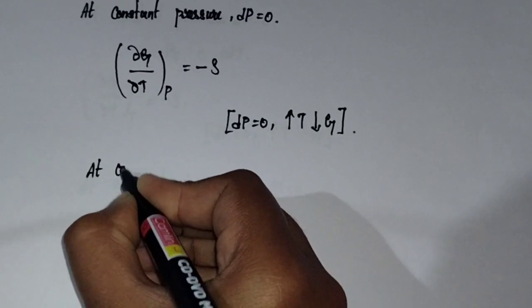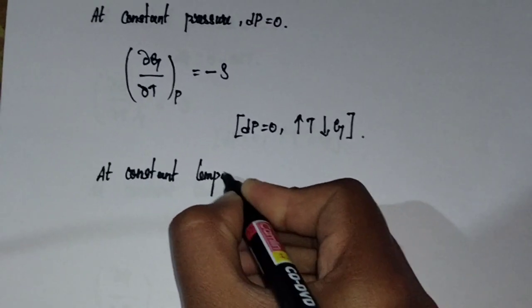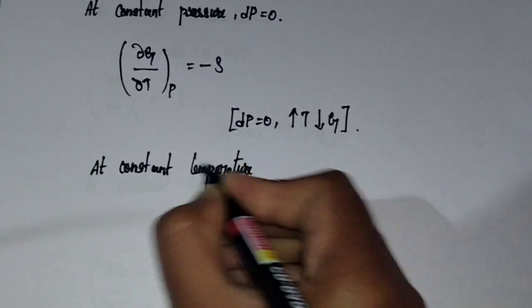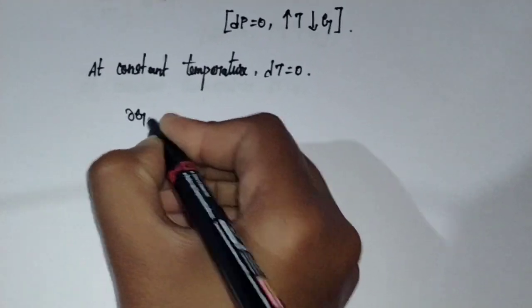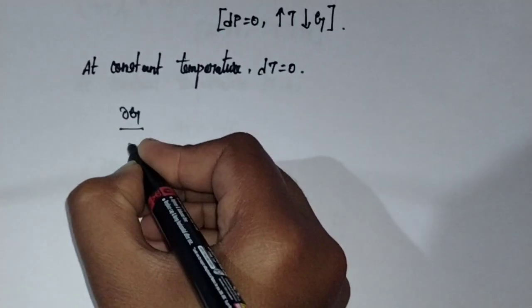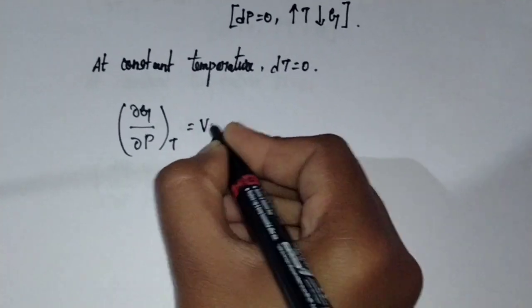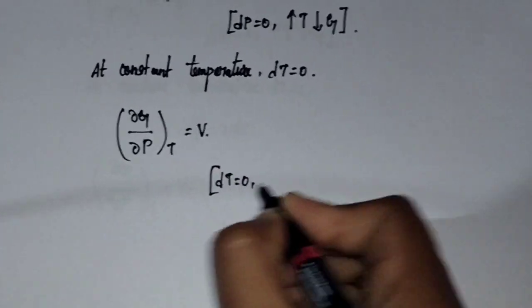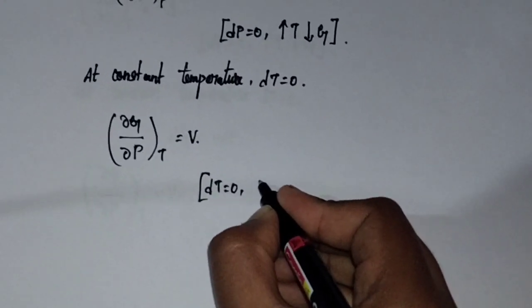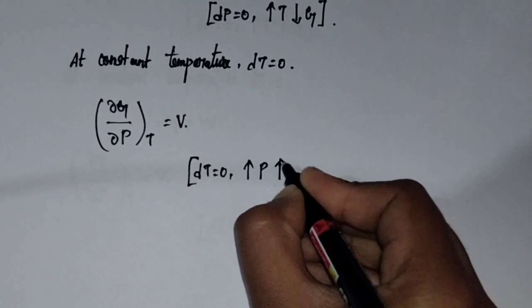At constant temperature, dT equals zero, so the change in Gibbs free energy with respect to pressure at constant temperature — that is (∂G/∂P) at constant temperature — is equal to volume V. So at constant temperature, when the value of pressure increases, the value of Gibbs free energy will also increase.